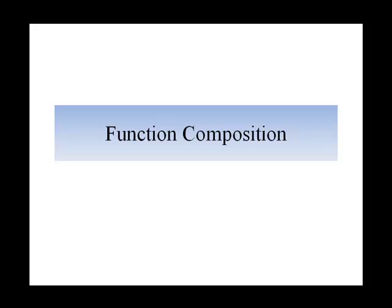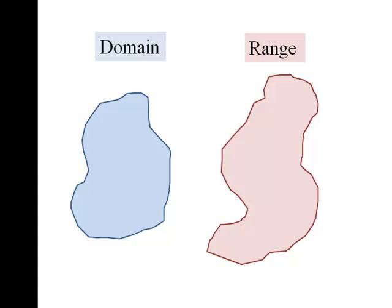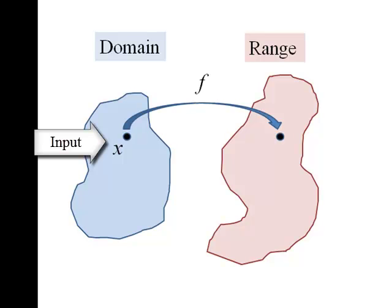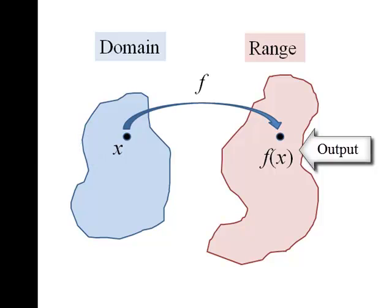This video is intended to introduce the notion of function composition. Now we know that when we have a domain and range and some element in the domain, it can be mapped to an element in the range by some function f. And we might call that output f of x. So f maps x to f of x from the domain to the range.